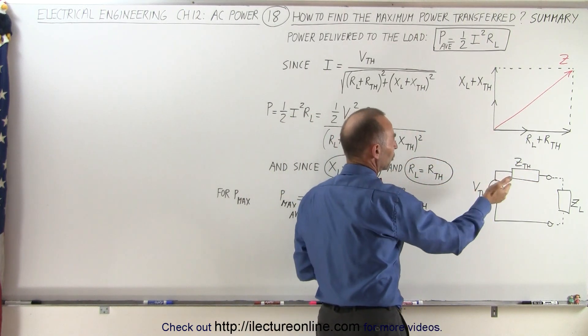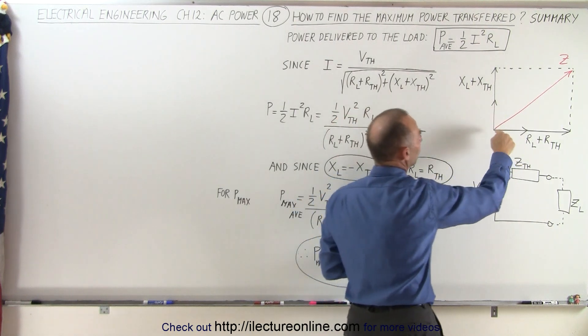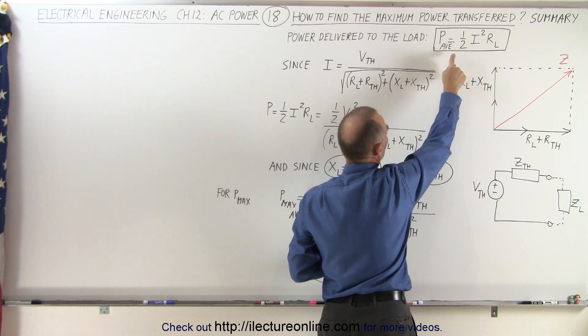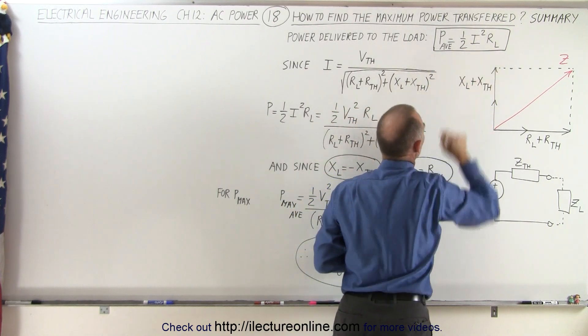Notice that the current through the circuit is going to be equal to the voltage divided by the total impedance. So here we have the average power delivered to the circuit which is one half i squared times the load resistor.